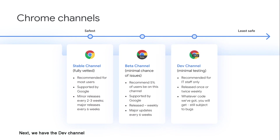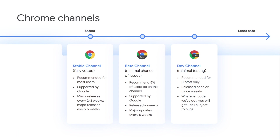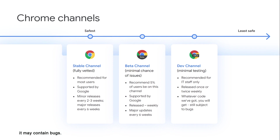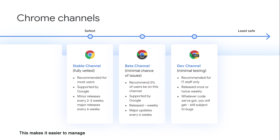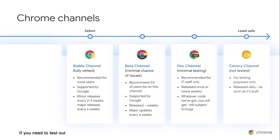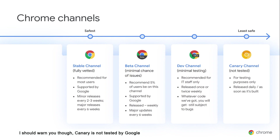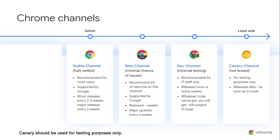Next, we have the dev channel, where IT staff can preview new features. These features may never make it to beta or stable, but it'll give you an idea of what we're working on so you can do some early testing. The dev channel is updated once or twice weekly, and because the features are new and minimally tested, it may contain bugs. In M90, we introduced target channel, a new policy that lets you choose between the stable, beta, and dev channels. This makes it easier to manage which versions of Chrome are in your deployment. If you need to test out the absolute latest version of Chrome, you can use the Canary channel, where developers can try out experimental features as soon as they're available. Canary is not tested by Google, so it may be unstable and should be used for testing purposes only. We release it daily or when it's built.